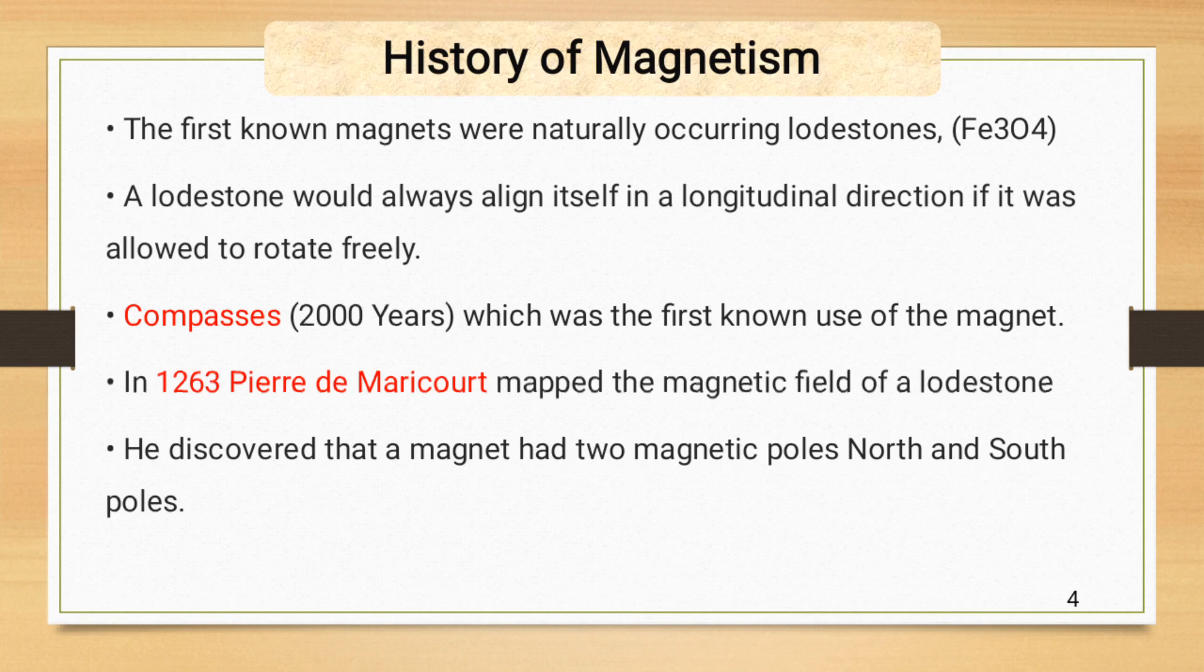History of Magnetism: The first known magnets were naturally occurring lodestones. Lodestones are basically iron ores, commonly called S-magnetite, having formula Fe3O4. A lodestone would always align itself in a longitudinal direction if it was allowed to rotate freely.